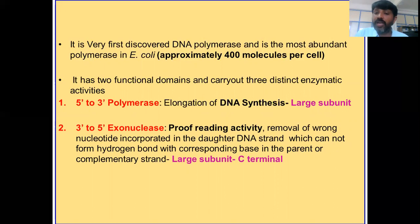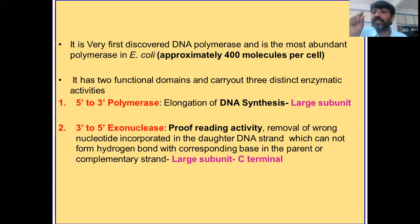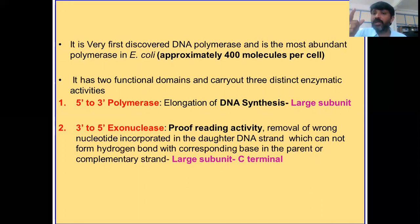The second activity is 3' to 5' exonuclease activity, which is the proofreading activity. Whenever a wrong nucleotide is added to the growing daughter strand, that nucleotide cannot form a hydrogen bond with the base in the complementary region. The 3' to 5' exonuclease activity identifies that wrong nucleotide and removes it from the strand — this is the proofreading activity.